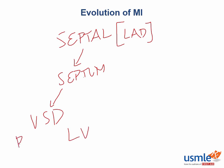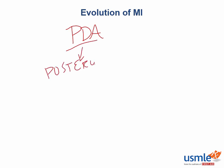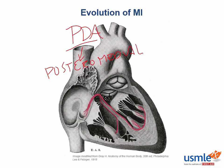When we talk about papillary muscle infarction, we think about the posterior descending artery being affected, which can kill the posteromedial papillary muscle. This muscle attaches to the posterior leaflet of the mitral valve and prevents it from ballooning up into the left atrium during systole. When infarcted, the mitral valve leaflet has nothing holding it back from flailing up into the ventricle during systole, resulting in acute onset mitral valve regurgitation.